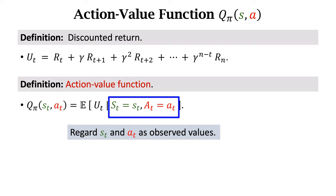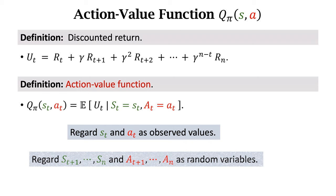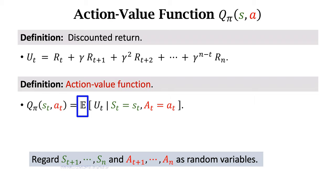The action value function is a conditional expectation. We take the expectation of UT given the observed values of st and at. Aside from st and at, the return UT depends also on states st+1 to sn and actions at+1 to an. Regard st+1 to sn and at+1 to an as random variables to be integrated out. The expectation is taken with respect to states st+1 to sn and actions at+1 to an. The expectation eliminates the random variables.